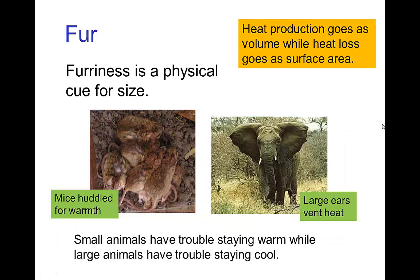The furriness of an animal is another physical cue for size. Heat production goes as the volume, whereas heat loss goes as the surface area. So small animals have a small volume relative to their surface area and lose a lot of heat — they either need to be very furry or bundle together to maintain warmth. Large animals, on the other hand, often have trouble staying cool. Large animals in a hot climate adapt by living in water or, for example, the elephant uses its large ears mostly to vent heat.